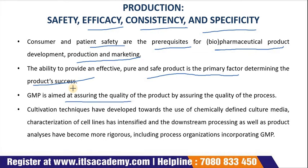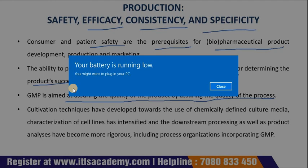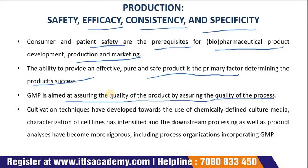GMP is aimed at assuring the quality of the product by assuring the quality of the process. With an ever-increasing number of national and international regulations, quality assurance has become a complex task for project managers. Good manufacturing practices are an asset and are very important. GMP should also be a part of the process development, reported approval requirements, and proceed through the validation, manufacturing, controls and end-product testing, as well as reaching into the distribution network of the product.